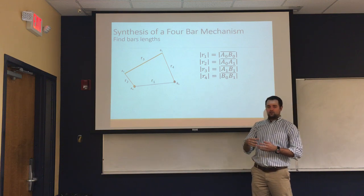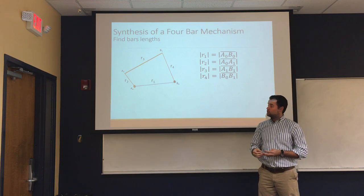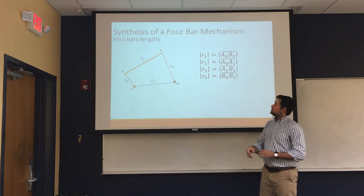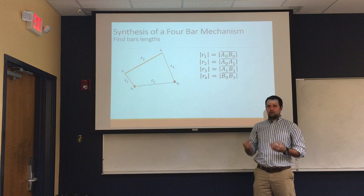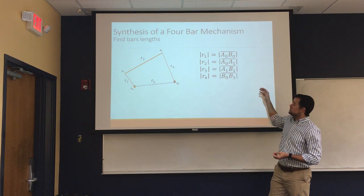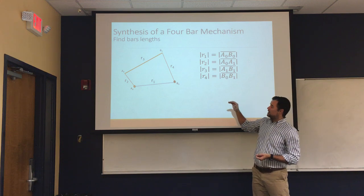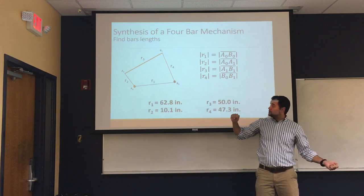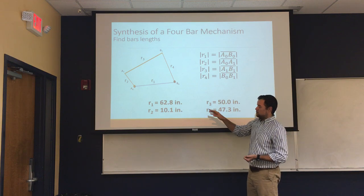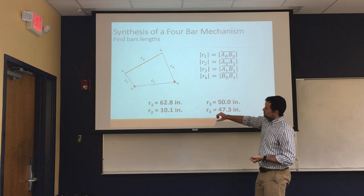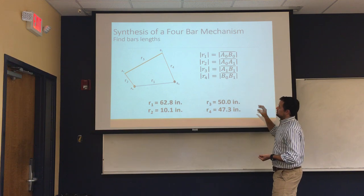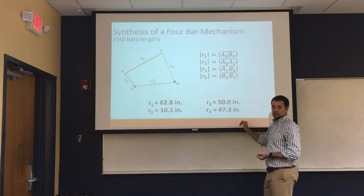So, now that we have our position of the initial A and B, we need to know the length of each bar. We can consider these values as a vector, and we use the formula for the vector length to know and get our length of each bar. And we got, our frame is going to be the largest one, it's going to be about 63 inches. Our small bar is going to be the first one over there, it's going to be 10 inches. And our other two is going to be the middle couplers, 50 inches and 47 inches.